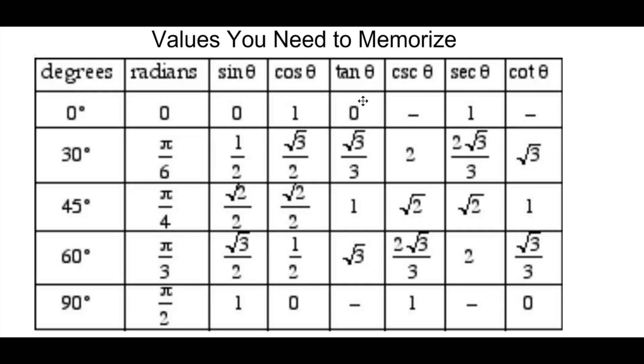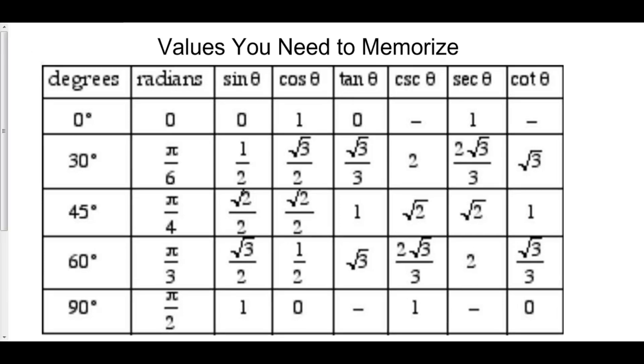Tangent, you don't even have to memorize because that's just sine over cosine. 0 over 1, 0. 1 half divided by root 3 over 2 is root 3 over 3. Root 2 over 2 divided by root 2 over 2 is 1. Root 3 over 2 divided by 1 half is root 3. And 1 divided by 0 is undefined because you can't divide by 0.